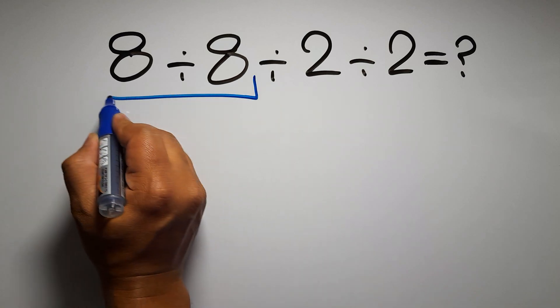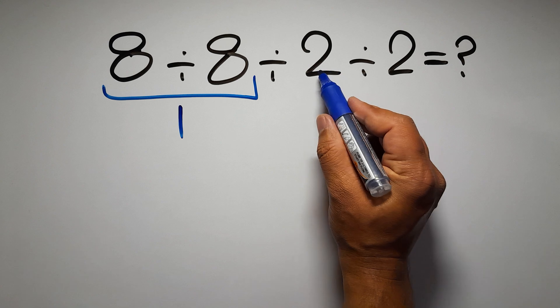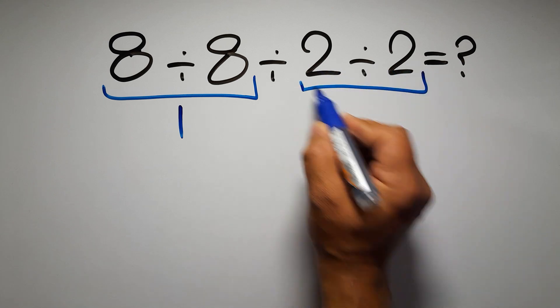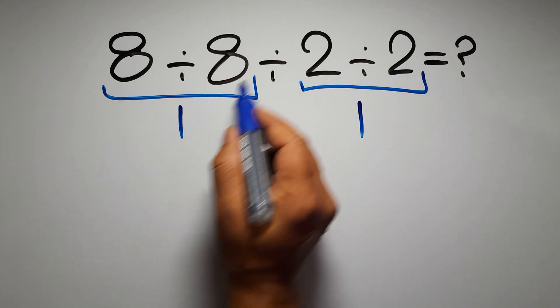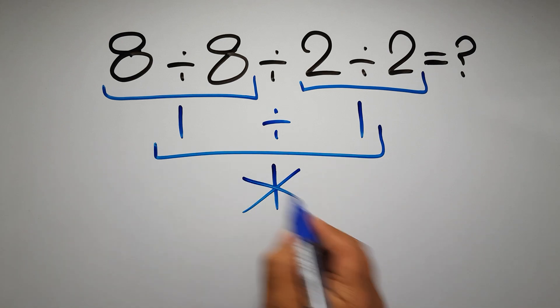8 divided by 8 gives us 1, and here we have 2 divided by 2, which equals 1, so 1 divided by 1 gives us 1. But this answer is not correct.